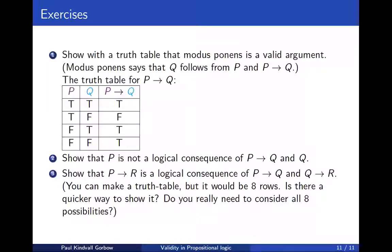Here are three further exercises. The first one is to show that the famous argument of modus ponens is a valid argument, using the definition of validity. The second one is to show that the invalid argument shown on the first slide is actually invalid. And the third one is about showing that a certain argument is valid, but instead of making a truth table of eight rows, I urge you to see if you can find a simpler solution — do you really need to consider all eight possibilities, or is it enough to consider fewer possibilities? Best of luck!